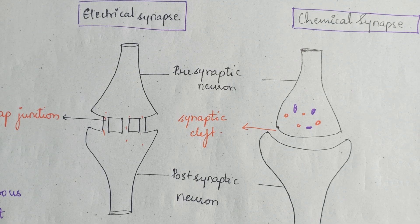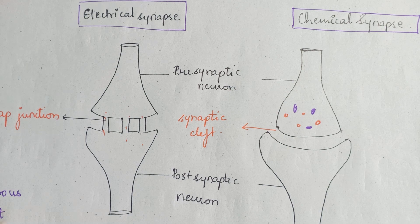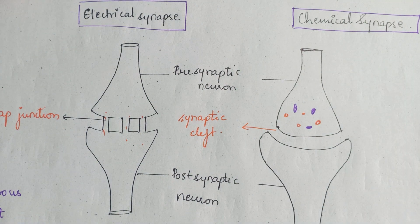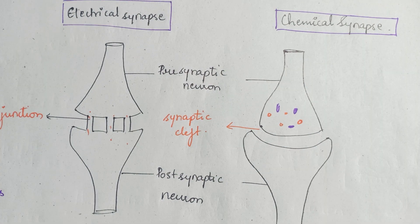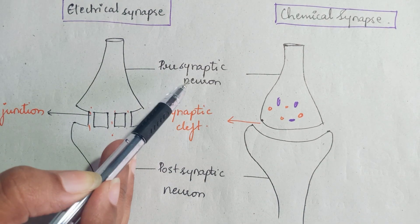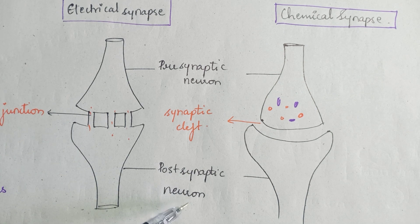This is the functional classification of synapses. On the basis of transmission of impulses, the synapse is classified into two categories: electrical synapse and chemical synapse. However, generally when they use the word synapse, it mainly refers to the chemical synapse. The neuron which transmits the impulse is called the presynaptic neuron and the neuron which receives the signal is called the post-synaptic neuron.